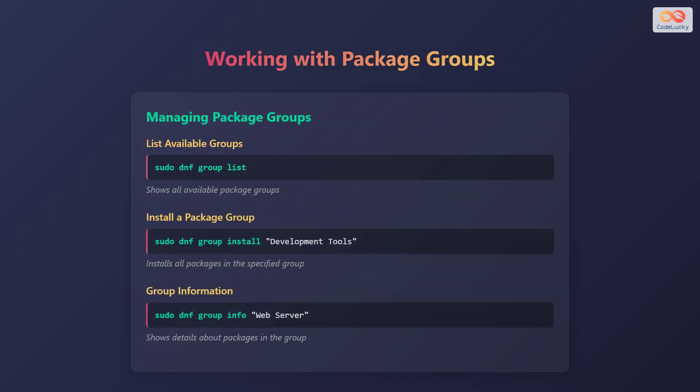Now let's explore how to work with package groups. To list available groups, use the command sudo dnf group list. This command shows all available package groups. To install a package group, use the command sudo dnf group install followed by the group name in quotes, such as development tools.